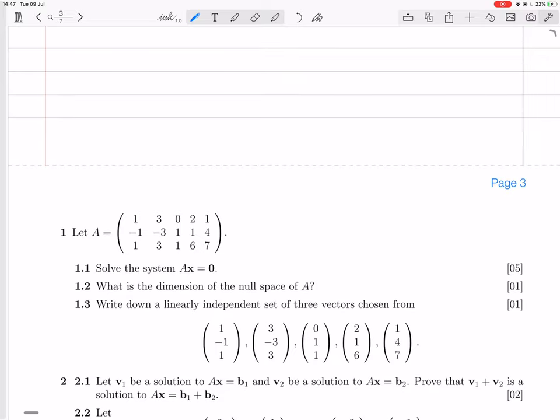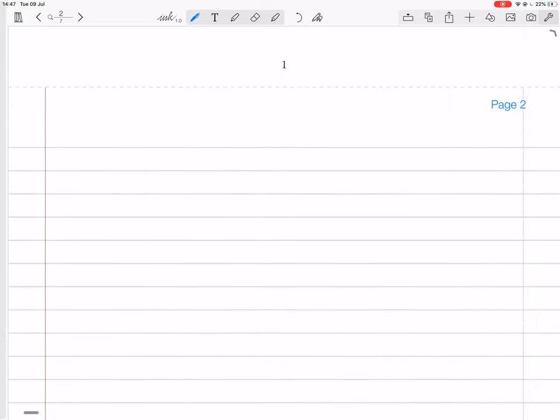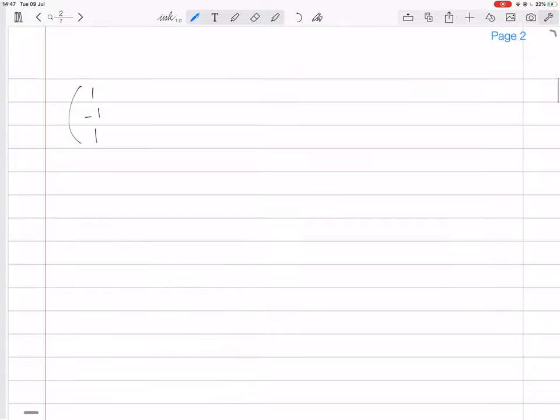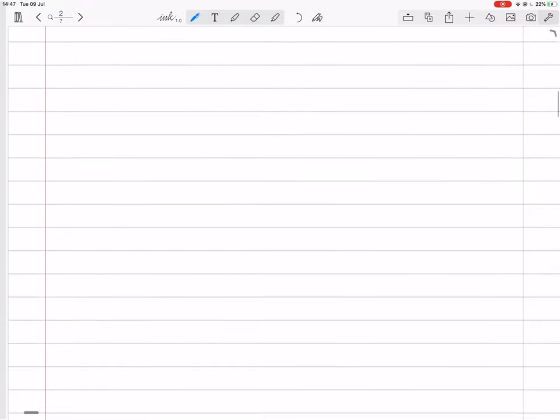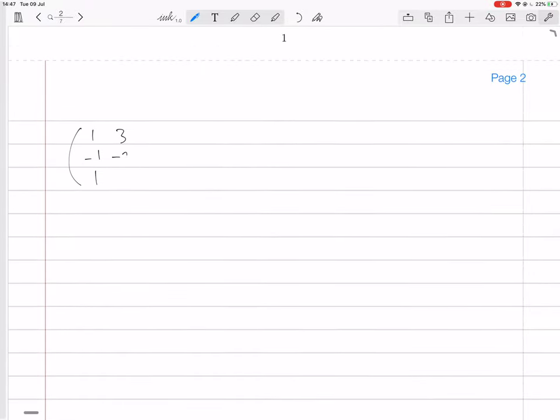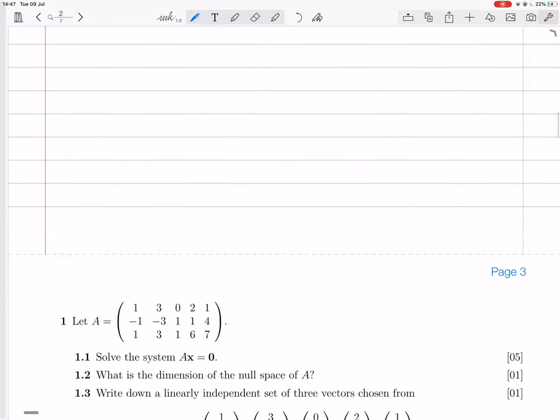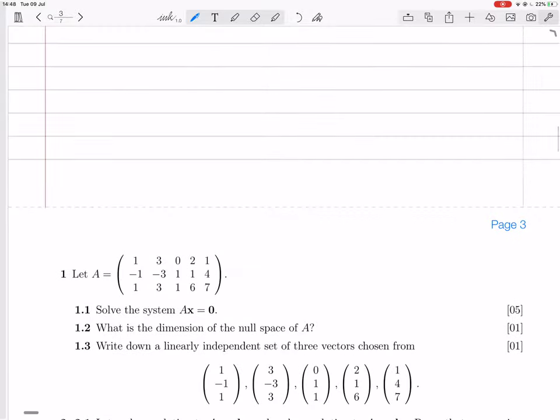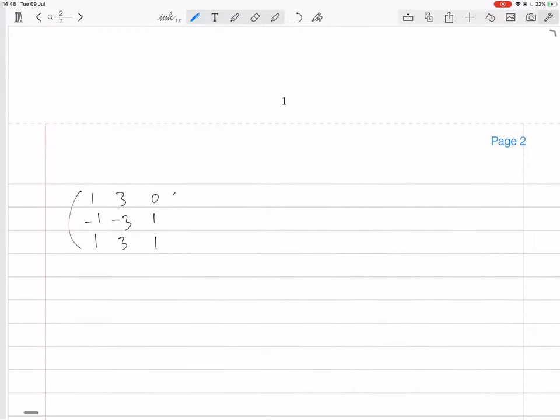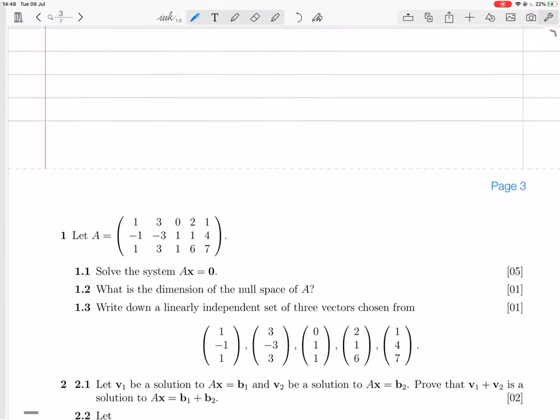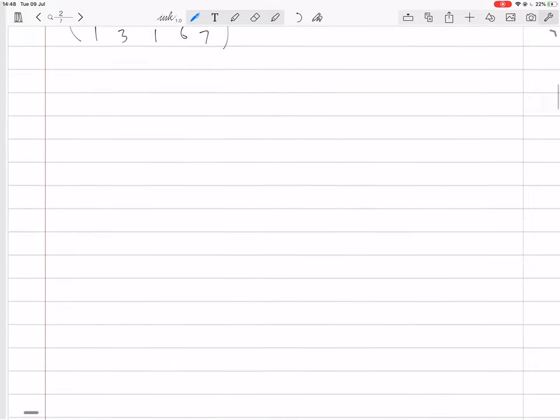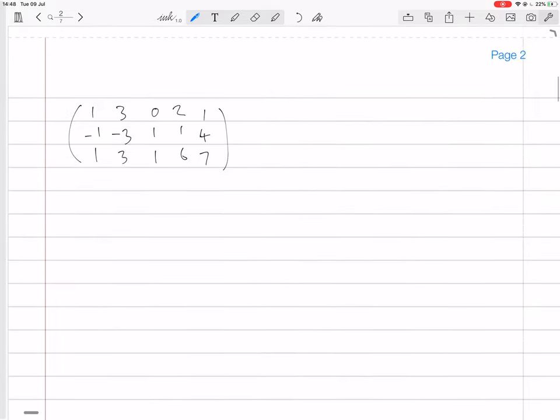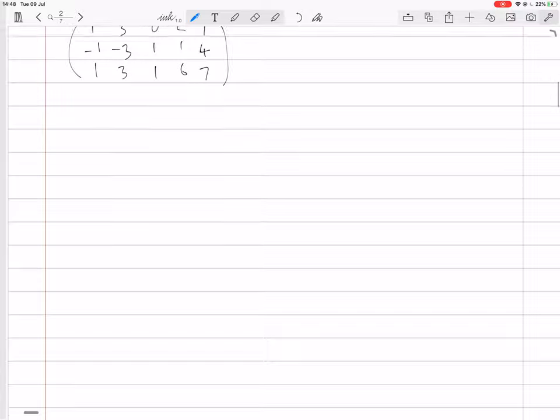So what is the matrix? We have the matrix 1, -1, 1, 3, -3, 3, 0, 1, 1, and then 2, 1, 6, 1, 4, 7. Let me just check that. Top row: 1, 3, 0, 2, 1. Next row: -1, -3, 1, 1, 4. Then 1, 3, 1, 6, 7. Yes, okay.